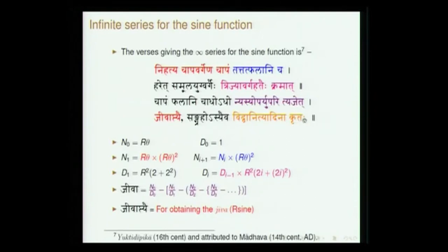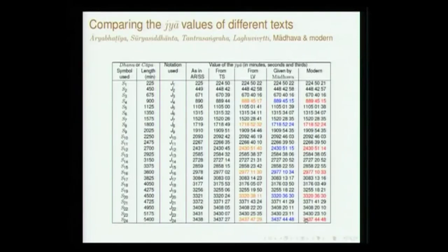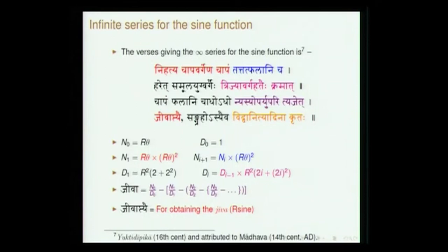Trijya is the radius, and in all computations you have this trijya. If you are able to compute the radius accurately, you will be able to improve upon the computation significantly. The verses presenting the sine series go as follows: 'nihatya chapa vargena chapa' — chapa refers to the arc (dhanuhu, chapa, always refers to the arc; jiya refers to the chord). Chapa varga is the square of the arc. Nihatya means having multiplied. So you multiply R theta² by R theta to get R theta³, and this also has to be multiplied by R theta² — 'tattat phala' means the results you obtain — punafpunaha (repeatedly) you do this multiplication, getting R theta, R theta⁵, and so on.